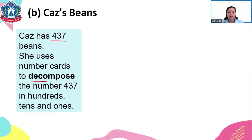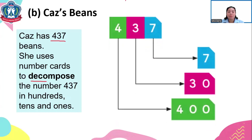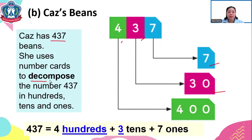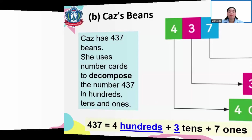Cash has 437 beans. She uses number cards to decompose the number 437 into hundreds, tens, and ones. So 437 is equal to 4 hundreds, 3 tens, and 7 ones. When we see decompose, we break the number apart into its place values.